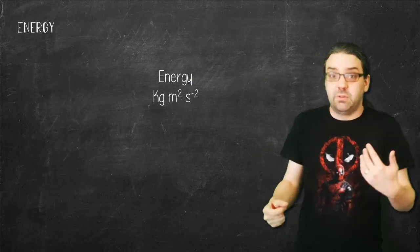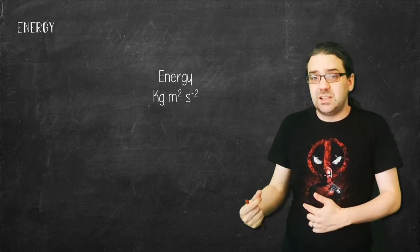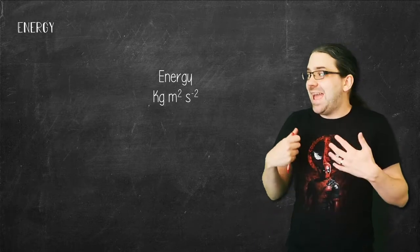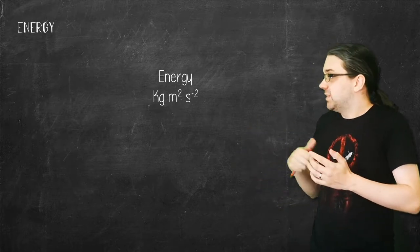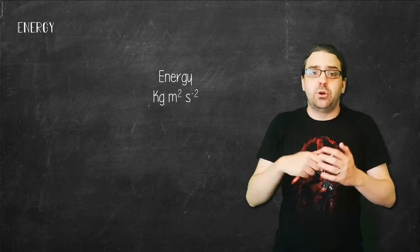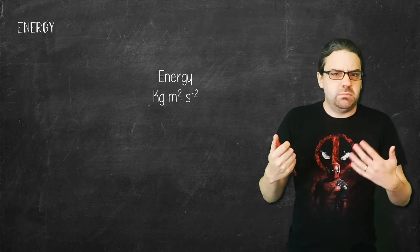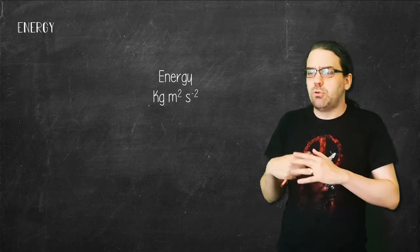An important set of relationships that we'll come across in understanding spectroscopy and quantum theory will be the relationships around energy. The base unit here is mass length squared per time squared, or time speed squared, which is E equals mc squared if you want to remember it.